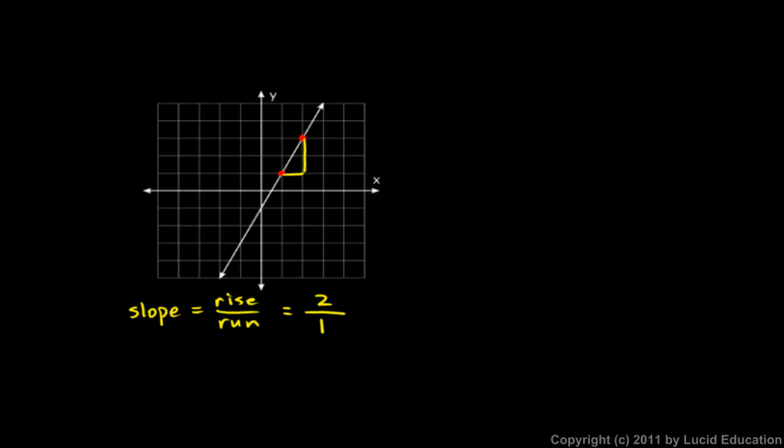You can make a pattern like that. You can come way down here at this point, down at the bottom, and you can imagine going up two and over one, and up two and over one, and up two and over one. And every time you do that, you end up at a point right on the line. This line has a slope of two. That means it goes up two for every one that it goes over. And slope is always rise over run.